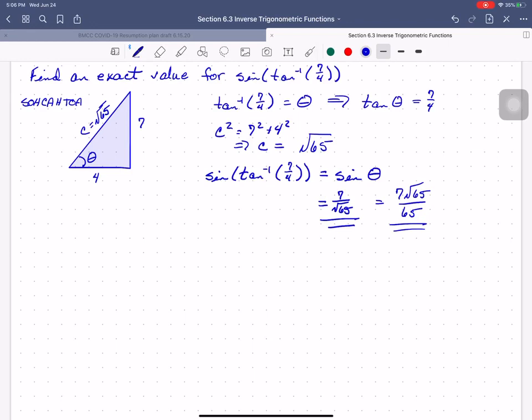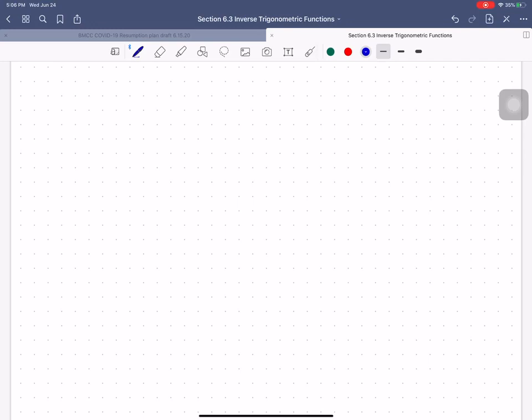Okay. I hope that this has been helpful. We're going to do one more example here and then I'm going to stop this video. So I want to find, this is a little more involved, we're going to find a simplified expression for the cosine of the inverse sine of x over 3.